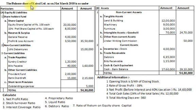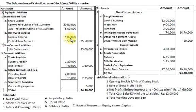The balance sheet of KEL Limited as on 31st March 2018. Equities and Liabilities: Shareholders Fund — Equity share capital of Rs. 100 each, Rs. 20,00,000; 10% preference share capital of Rs. 100 each, Rs. 8,00,000; Reserve and Surplus — General reserve Rs. 4,00,000; Profit and loss account Rs. 3,50,000. Total shareholders fund amounts to Rs. 35,50,000.